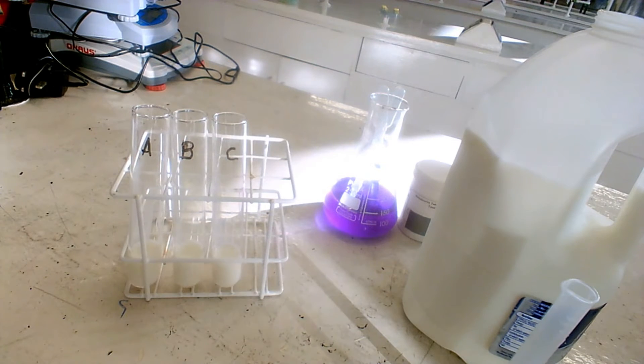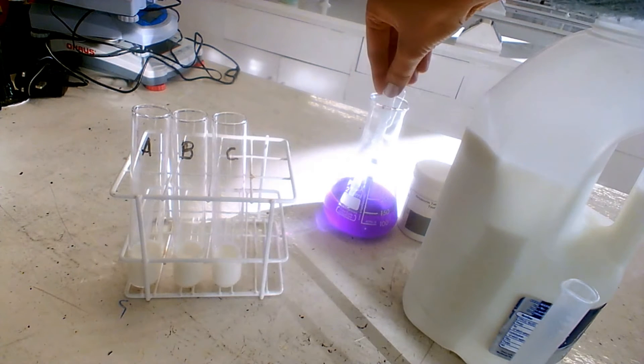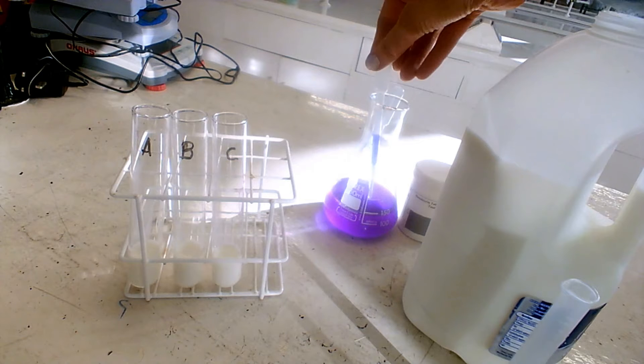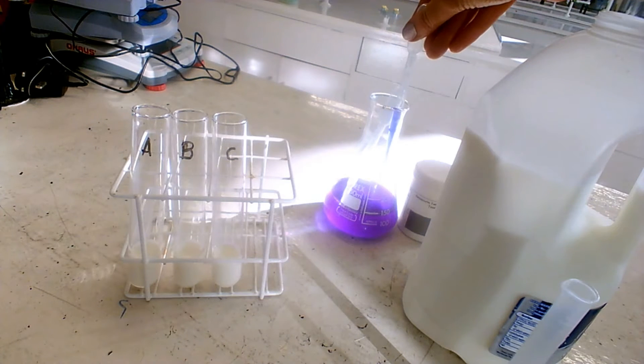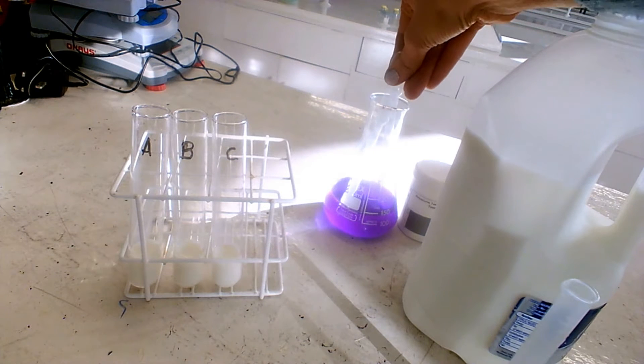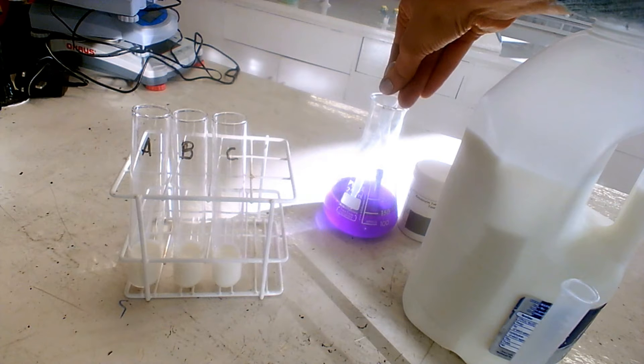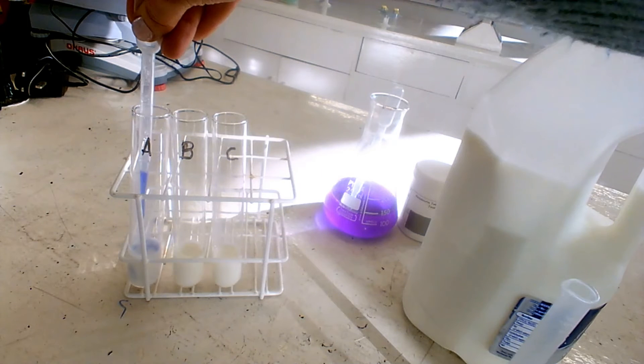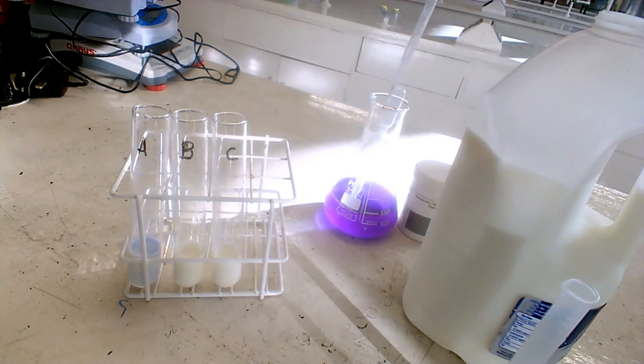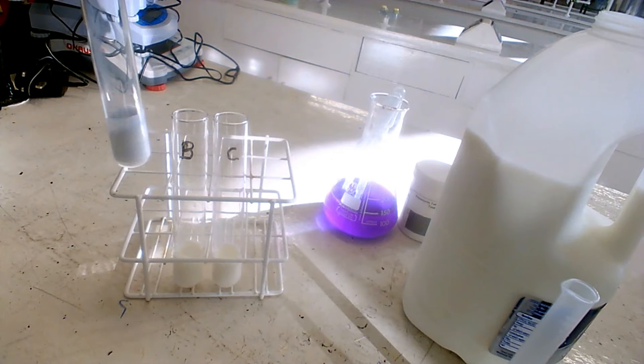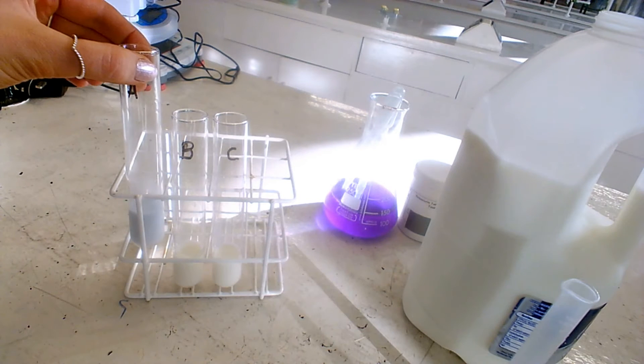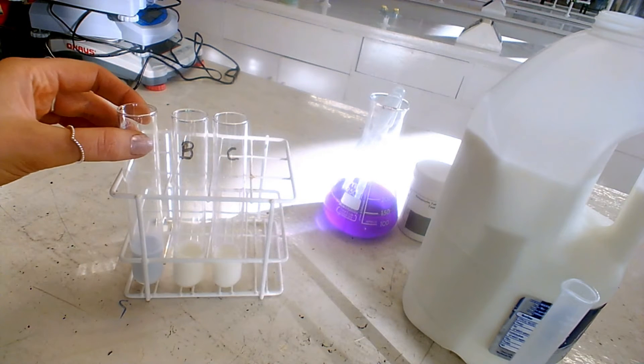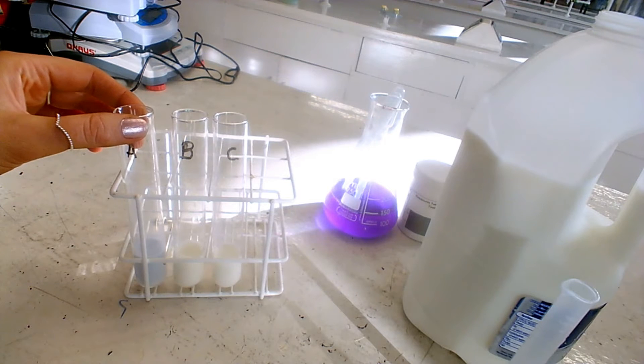Next, I need to add one ml of Resazurin to test tube A to determine how much bacteria is present in the sample at this current time. I'm going to put this in, swirl it around, and now place it into the water bath at 37 degrees Celsius for 15 minutes.